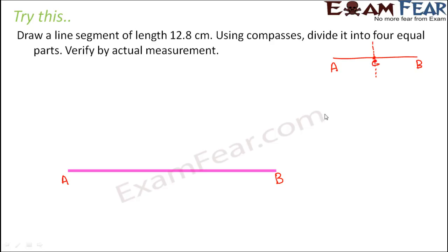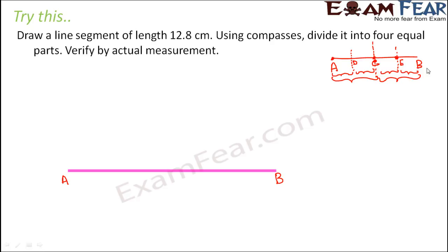So let's say it intersects AB at point C such that AC is equal to CB. So you have divided AB into 2 equal parts. But we want 4 equal parts. So for that, what you can do is again draw a perpendicular bisector of AC. This will divide AC into 2 equal parts such that AD is equal to DC. Similarly, you draw a perpendicular bisector of BC such that CE is equal to EB. So now AB is divided into 4 equal parts: AD, DC, CE, and EB.